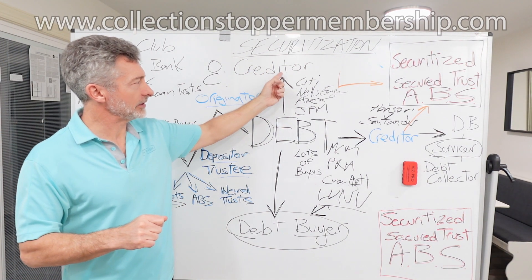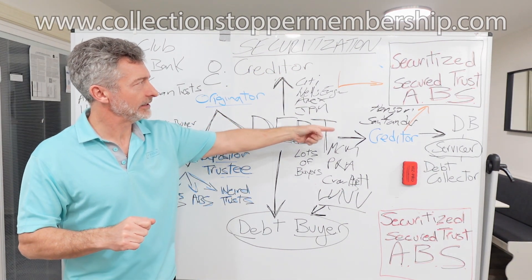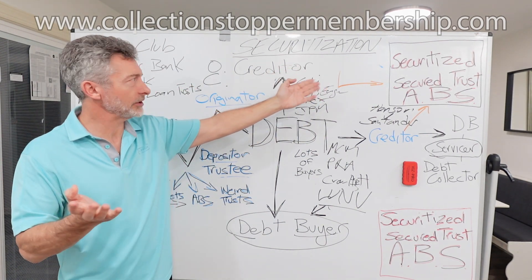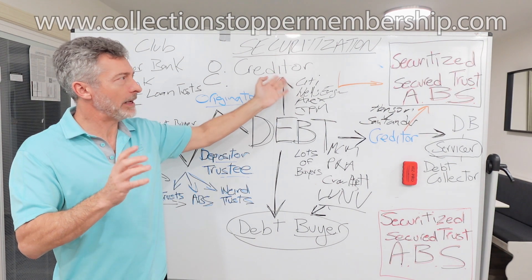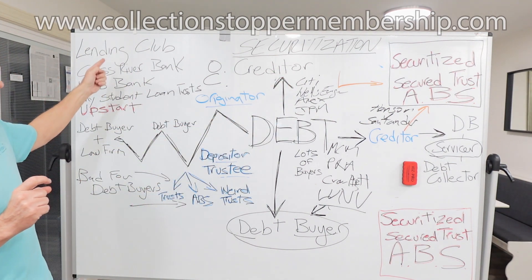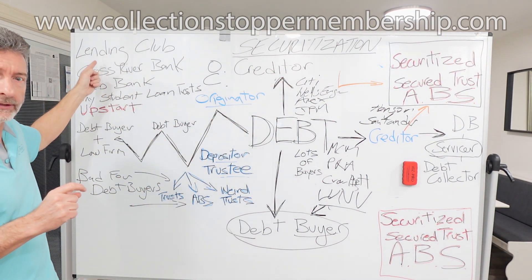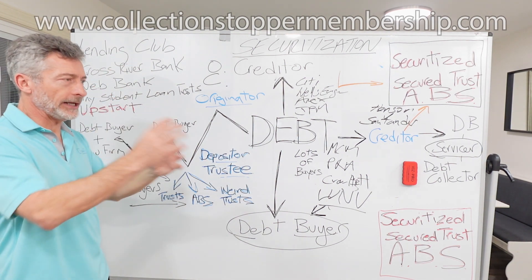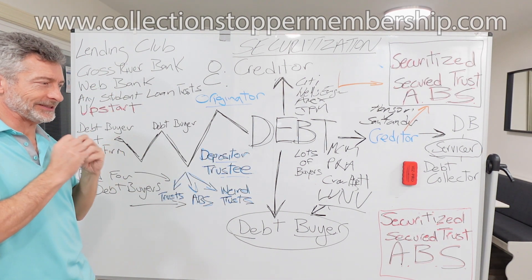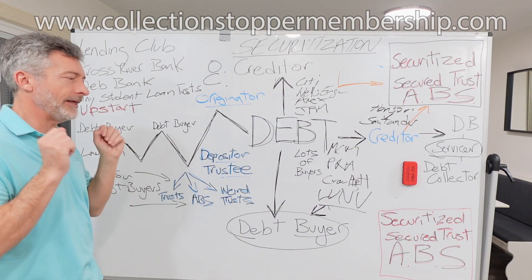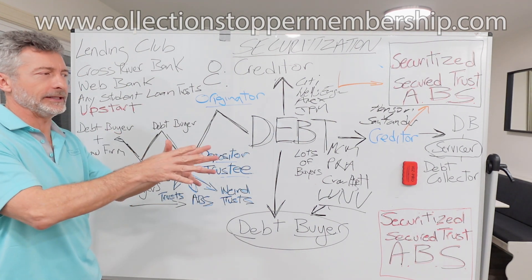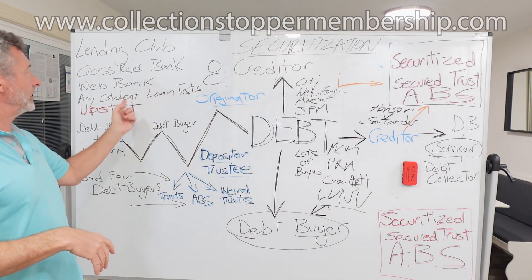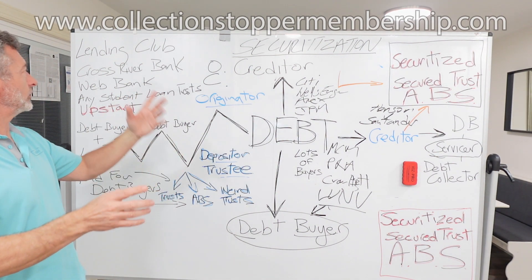In part one, we looked at creditors and how they have a choice — they can say maybe we're going to securitize, which they all do, or maybe they won't. Whereas in part two, these companies have said: we're getting money from a securitized trust, then lending it, and that debt is immediately securitized. They don't want to service it — they have other companies that do that.